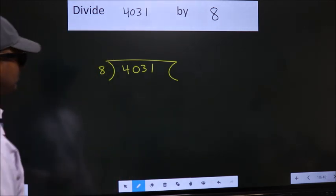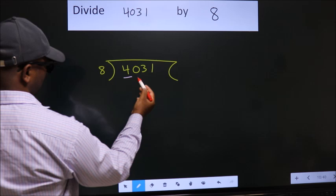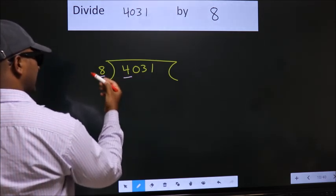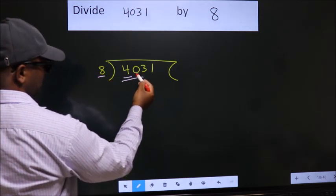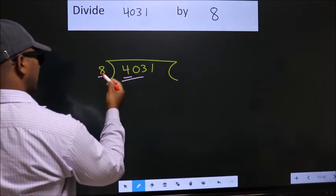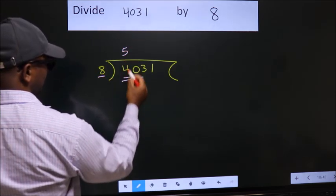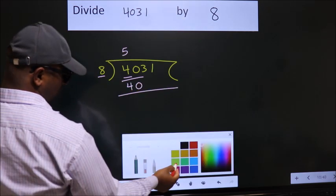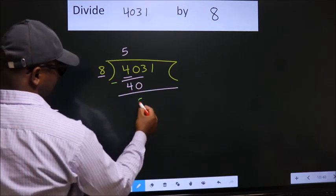Next. Here we have 4. Here 8. 4 is smaller than 8. So, we should take two numbers, 40. When do we get 40 in the 8 table? 8 fives 40. Now, we should subtract. We get 0.